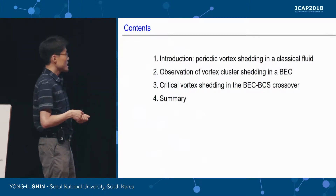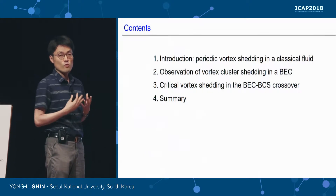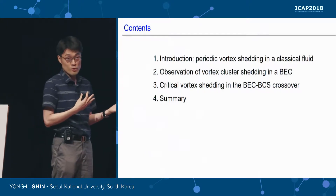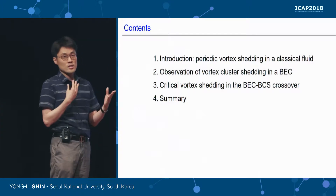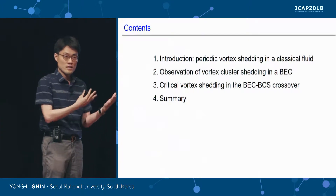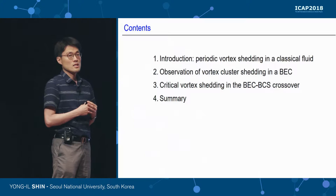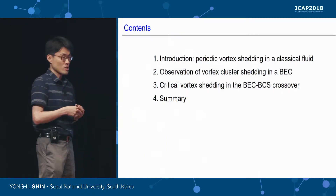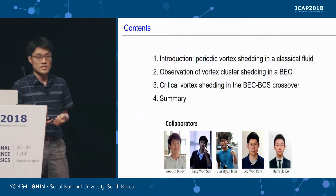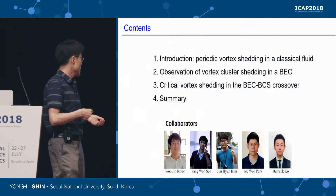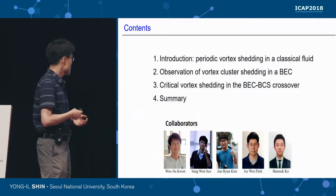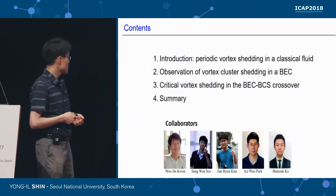In the second experiment, we measured the critical velocity for vortex shedding in the BEC-BCS crossover regime, where we study the relation of the critical velocity for vortex shedding to the Landau critical velocity. And I will give a summary.